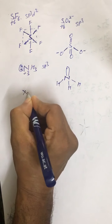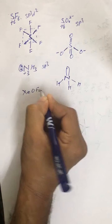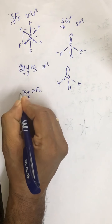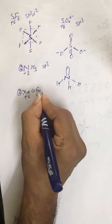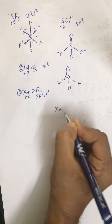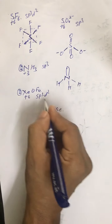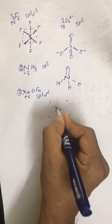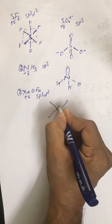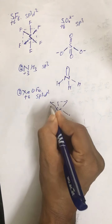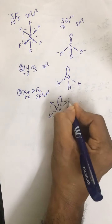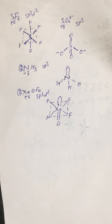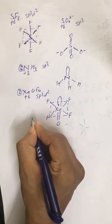For XeOF₄, xenon has oxidation state +6; counting gives one lone pair, and with five bonding pairs the hybridization is sp3d2. Although sp3d2 normally gives octahedral geometry, with one lone pair and one oxygen present it becomes square pyramidal — not square bipyramidal.